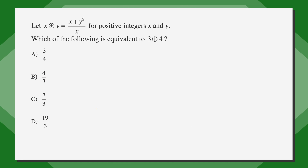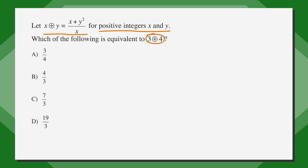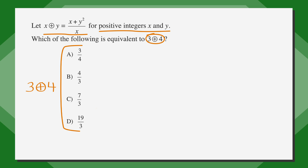Let's jump in and solve a symbol question. Let x circle-cross y equal (x plus y) squared over x, for positive integers x and y. Which of the following is equivalent to 3 circle-cross 4? Here are the answer choices, all of which are in fraction form. Let's underline the facts, circle the key terms, and label our answer choices as 3 circle-cross 4, since that's what we're looking for.